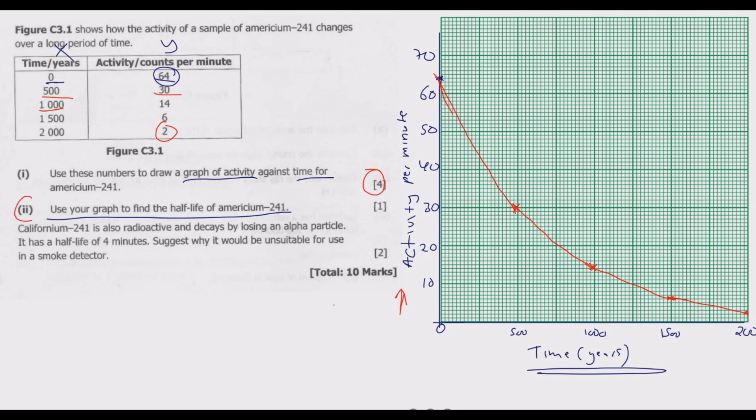Part (ii): Use your graph to find the half-life of americium-241. Starting from 64, half of that is 32. So we need to find the time at which the count is 32. Count 32 is along this line, so we draw a line from 32 on the y-axis across to the curve.